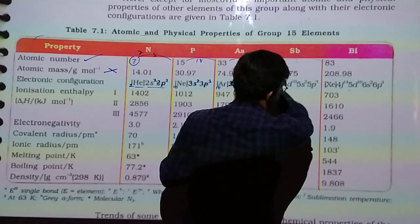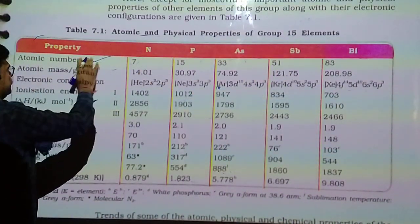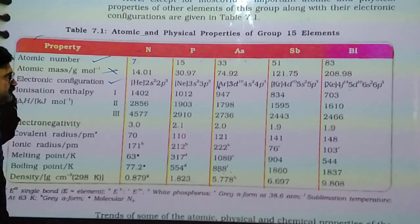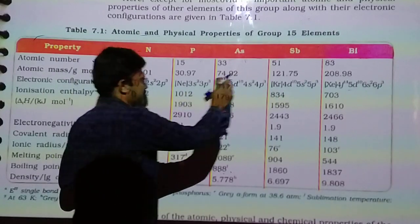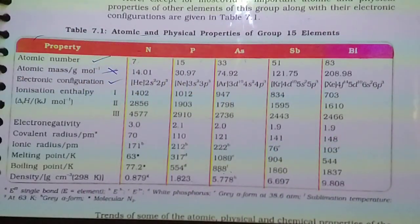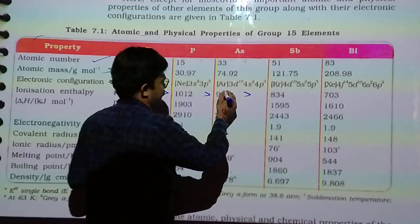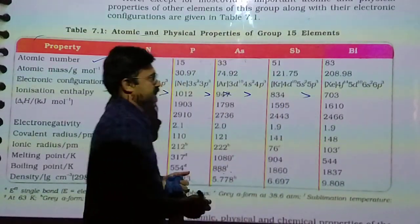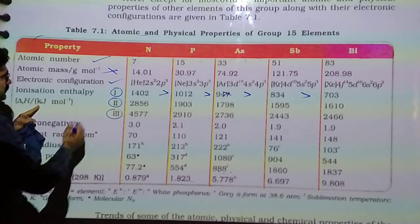First line you have to remember, not atomic mass from this table. Third line, you have to remember electronic configuration. Now ionization energy, you need to remember only increasing and decreasing order, not values. First ionization enthalpy, second, third.